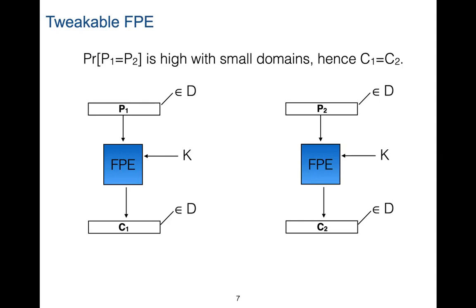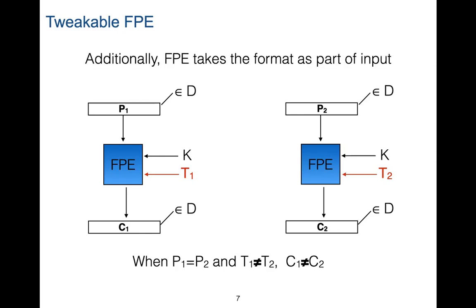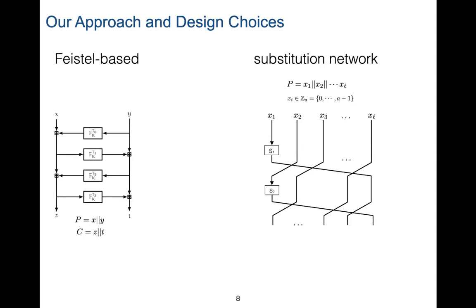FPEs are generally tweakable because domains are too small — there is a high probability that two different database records for different users share the same plaintext and would encrypt to the same ciphertext, which leaks information. Therefore we introduce a tweak, which is important for domain separation. The FPE also takes the format as part of the input. Here I show two different styles of format preserving encryption: on the left, a Feistel-based FPE where the message is divided into two halves entering branches with a round function defined by a secret key K and a tweak; on the right, a substitution network where each character enters substitution boxes. In our case, there will be no secret key AES computations in the rounds — AES is only used in the secure setup for key derivation.